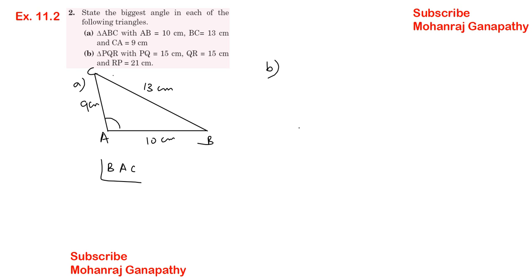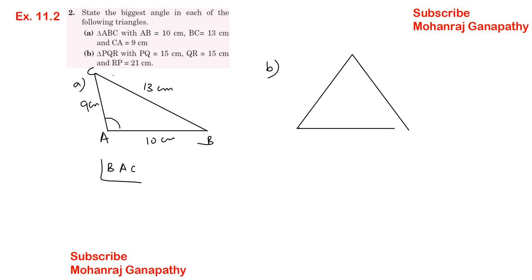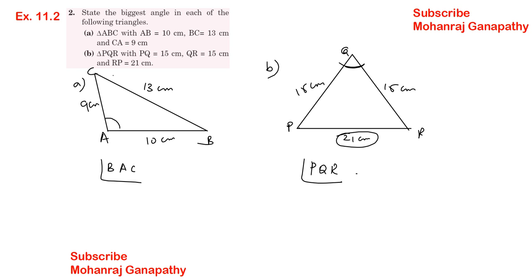Part B (triangle PQR): PQ = 15 cm, QR = 15 cm, RP = 21 cm. The longest side is RP = 21 cm, so the biggest angle is angle Q — the angle opposite the longest side RP.